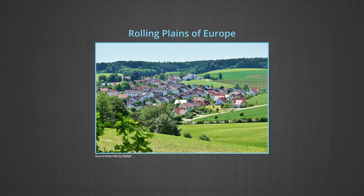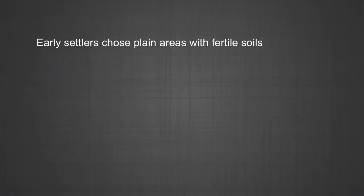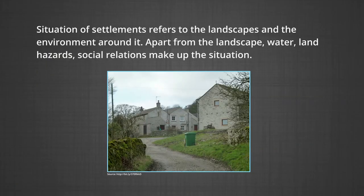The main occupation of inhabitants of rural settlements is agriculture, which is why people choose to settle near fertile lands suitable for agriculture. In Europe, villages grew near rolling country avoiding swampy low-lying land, while people in South Asia prefer to live near low-lying river valleys and coastal plains suited for wet rice cultivation. Early settlers chose plain areas with fertile soils. Another factor affecting location of rural settlements is situation, which refers to the landscape and the environment around the settlement — including water, land hazards, and social relations.